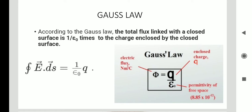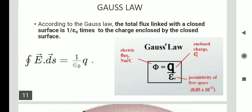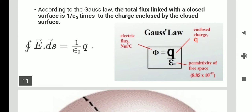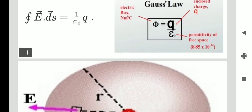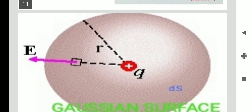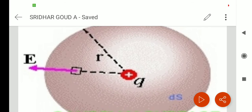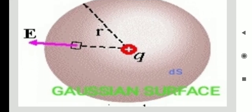In another form, since ∮E·dS equals phi (flux), we write phi = Q/ε₀. This means the electric flux is directly proportional to the enclosed charge. The flux equals (1/ε₀) times the enclosed charge. This is Gauss's law, where E is the field, Q is the charge, and S is the surface.